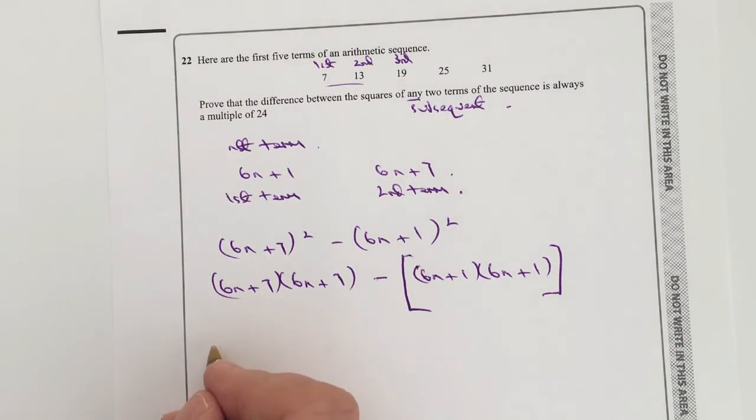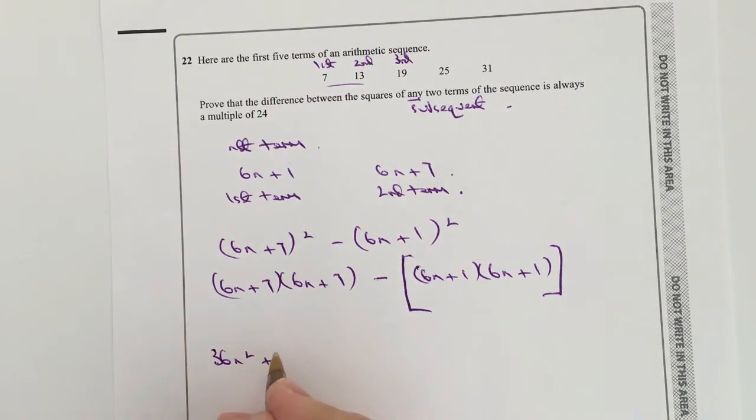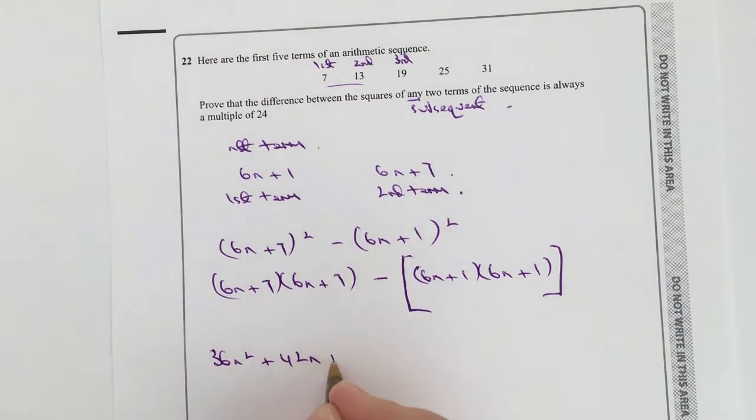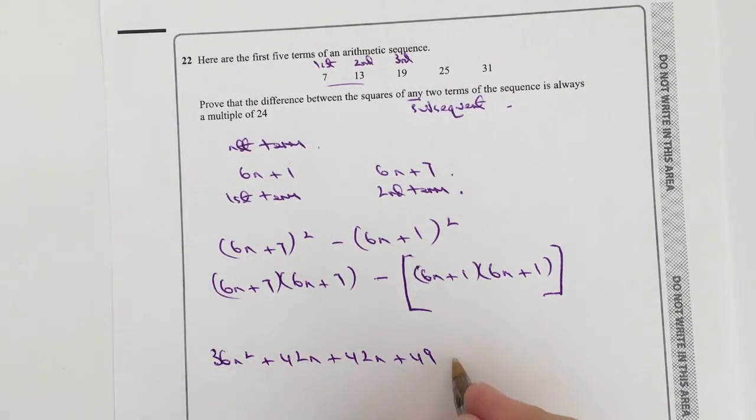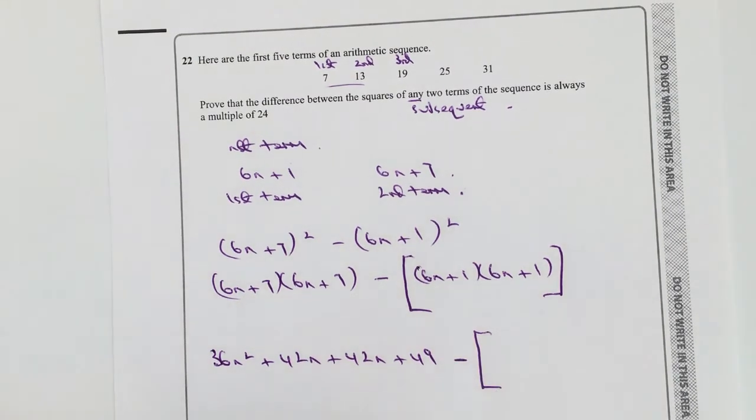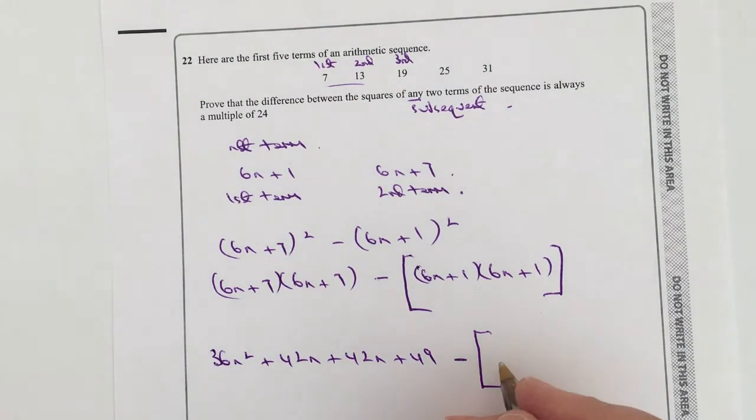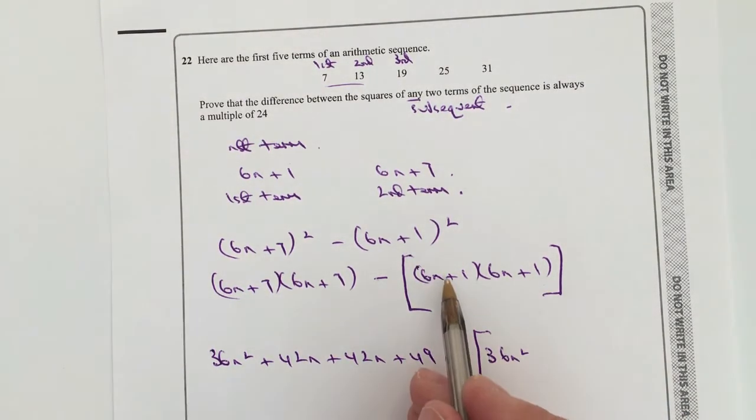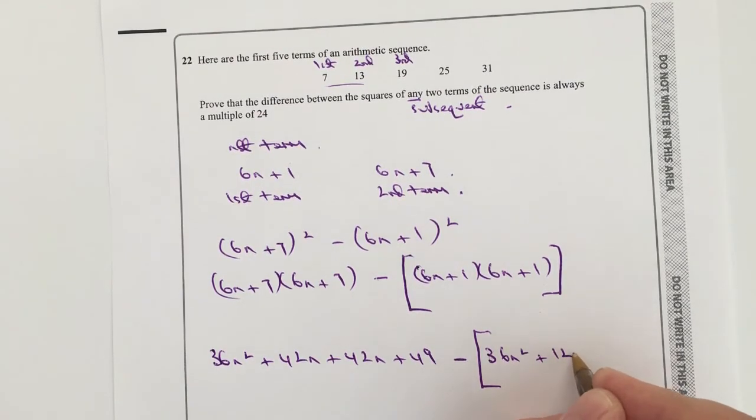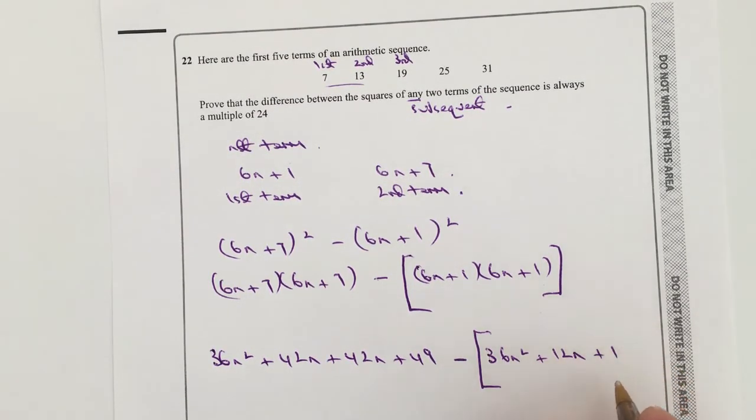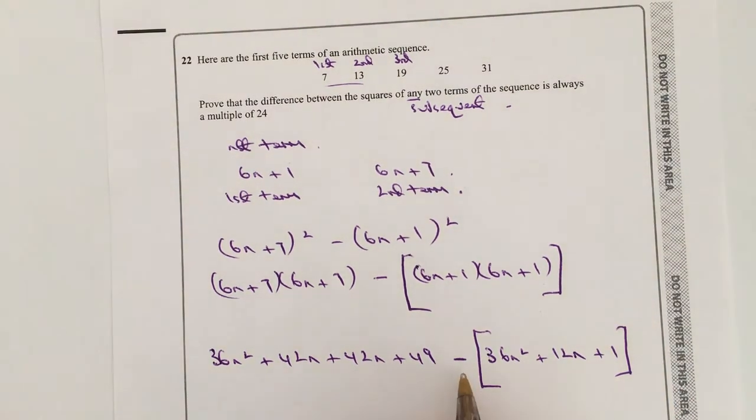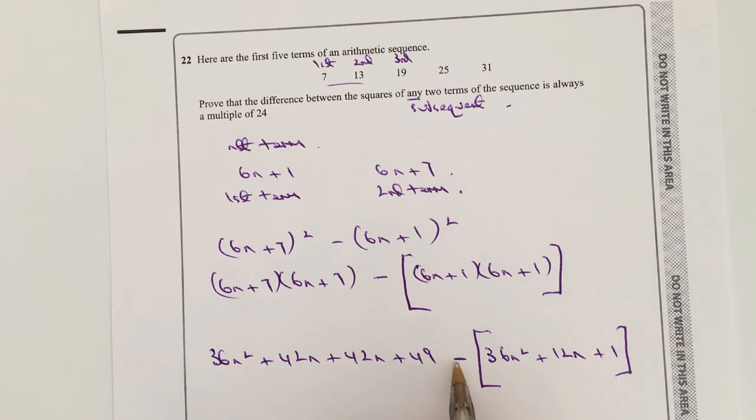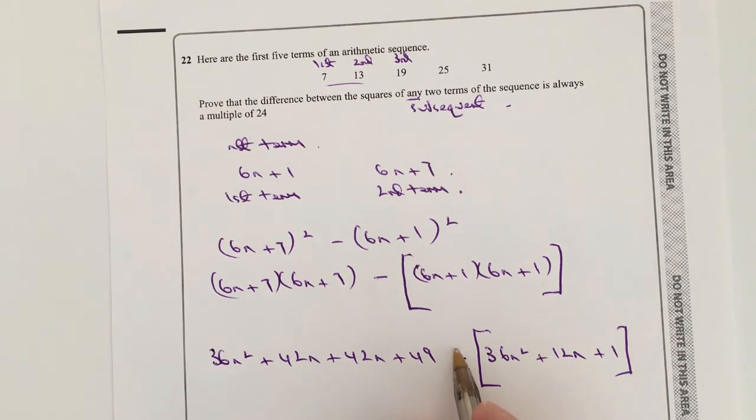Well, 6 times 6 is going to be 36n squared, plus 6 times 7 is 42n, plus 42n again, plus 49. So this is this one here, and that's going to be minus, and again I'm going to put this in big brackets just to remind myself, and that's going to be 36n squared, 6 times 6, plus 6 again is plus 12n, and that's plus 1. Okay, be careful, 1 times 1 is 1.